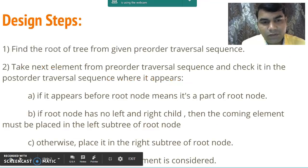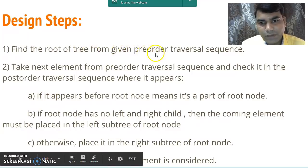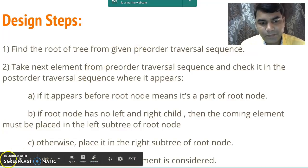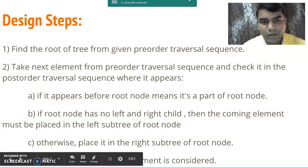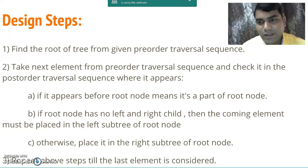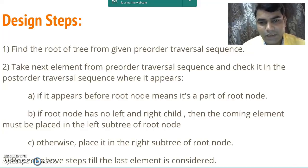To find the root node of the tree we use the pre-order sequence given to us. As we know in the pre-order sequence the root always comes at the beginning. After getting the root node, take the next element from the pre-order sequence itself and check it into the post-order traversal sequence where it appears.